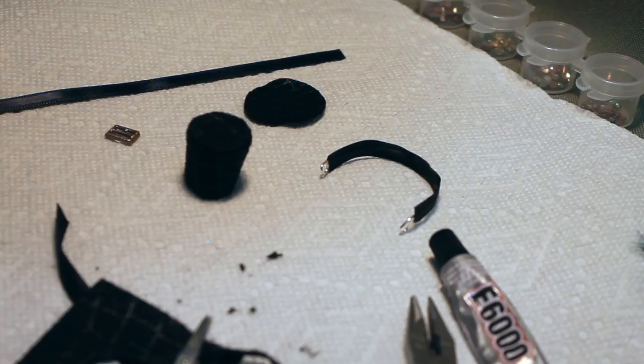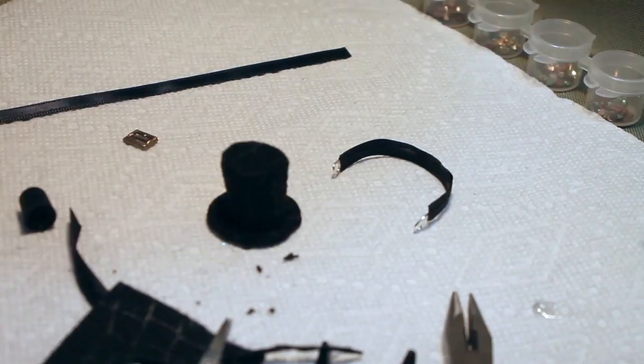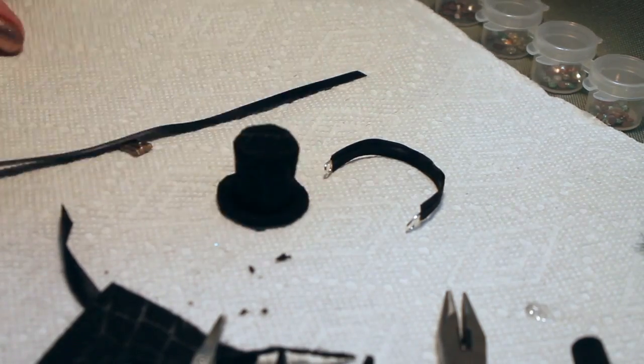Now put some glue on the inside of the bottom part and set it on top of the round circle that's the brim. And there's our little tiny top hat. So cute!